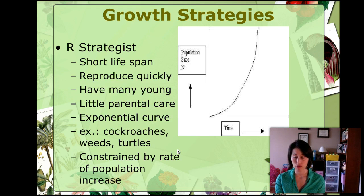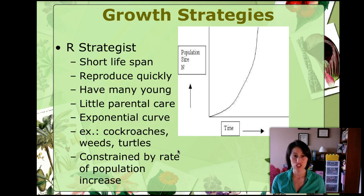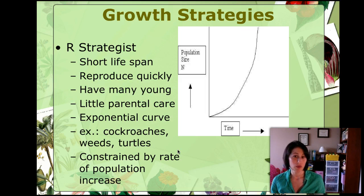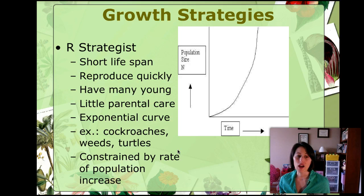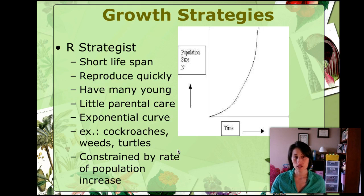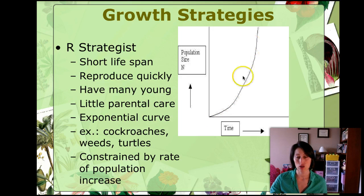Now let's talk about the types of populations that grow in certain ways. R strategists — where R stands for reproduction — are organisms that reproduce extremely quickly and overpopulate. They typically have a short lifespan, reproduce very quickly, have lots of offspring, and provide little parental care. This follows the exponential growth curve. Examples include cockroaches, weeds, turtles, and bacteria. These organisms put more energy into reproducing than into caring for their offspring.